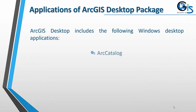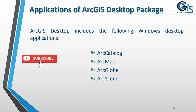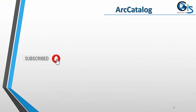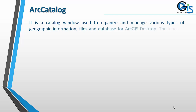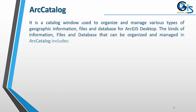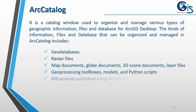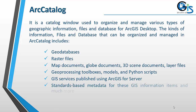Applications of the ArcGIS desktop package. ArcGIS desktop includes the following Windows desktop applications: Arc Catalog, ArcMap, ArcGlobe, and ArcScene. Arc Catalog is a catalog window used to organize and manage various types of geographic information, files, and databases for ArcGIS desktop.